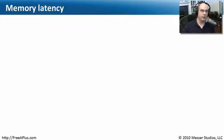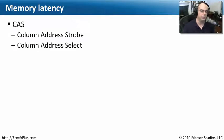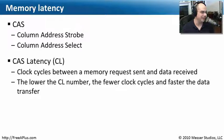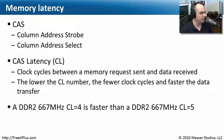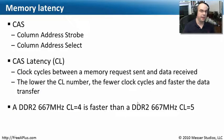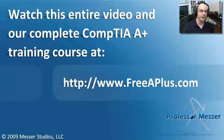Another specification for memory you want to think about is memory latency. You'll see this referred to as CAS — which stands for column address strobe, also called column address select. There's a number called CAS latency, or CL, and that refers to the clock cycles between when a memory request is sent and when we receive the data. What you want is a low amount of latency — the lower the number, the fewer clock cycles have to go by, and the faster the overall throughput of your computer will be. For example, DDR2 memory running at 667 MHz with a CL of 4 is going to be faster than the same memory with a CL of 5.